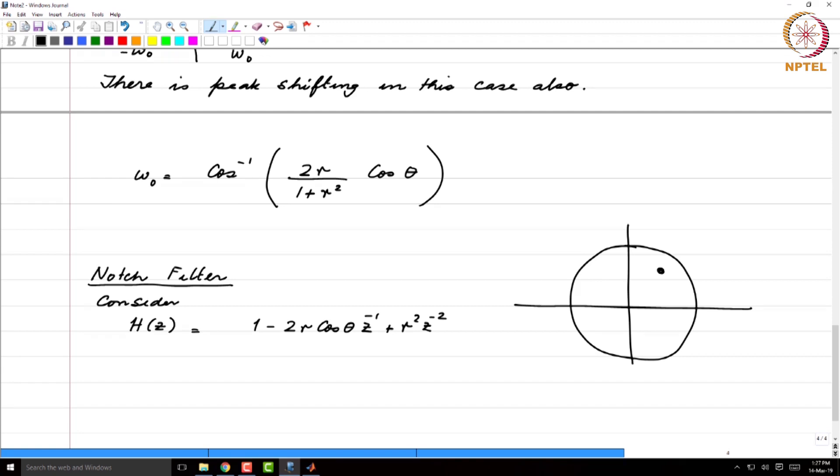So, you had two poles here, they have now become zeros and then the trivial second order zero has become a second order trivial pole.